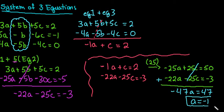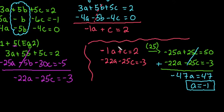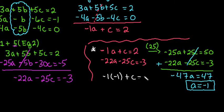We're not done — we still need to find b and c. I'll work with the two-equation system to find c. I'll plug a equals negative 1 back into the equation negative 1a plus c equals 2, since c is already by itself. So negative 1 times negative 1 plus c equals 2, which gives me 1 plus c equals 2, so c equals 1. Now we have two of our three answers.